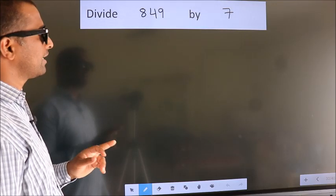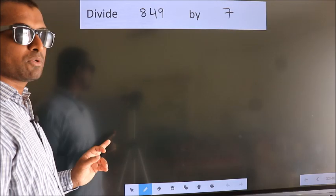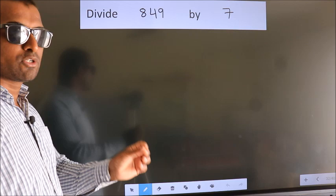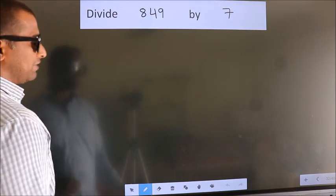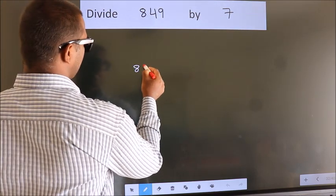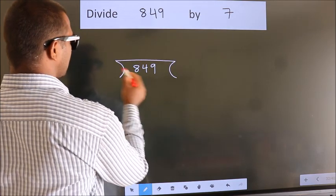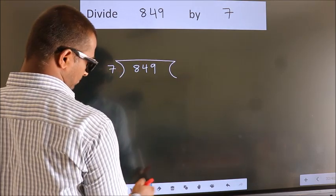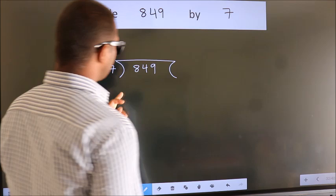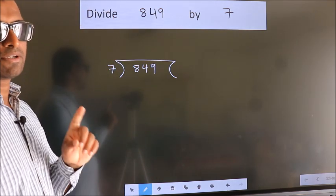Divide 849 by 7. To do this division, we should frame it in this way. 849 here, 7 here. This is your step 1.